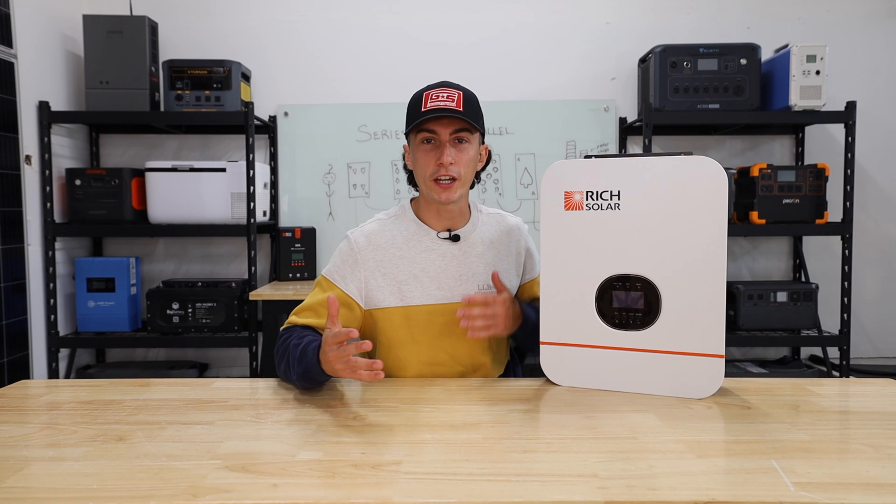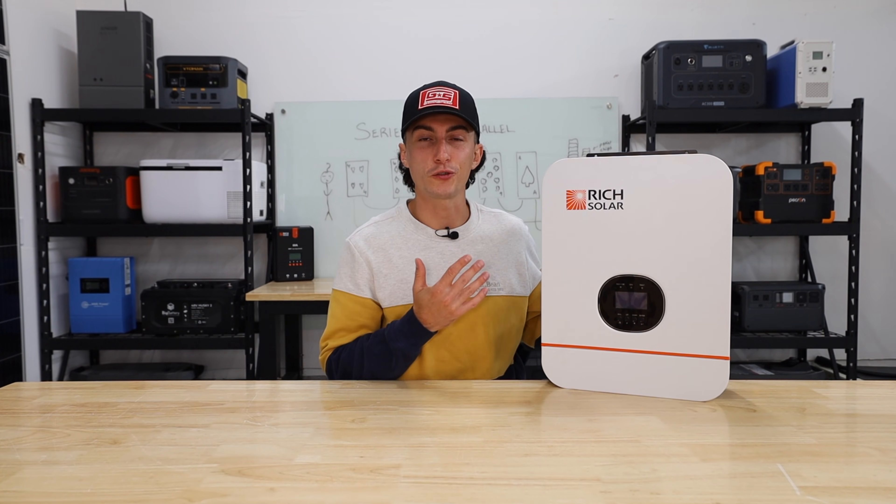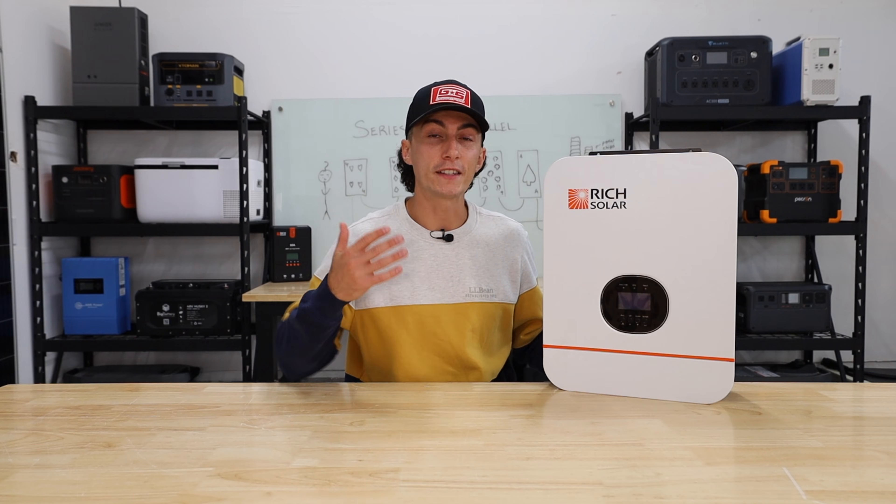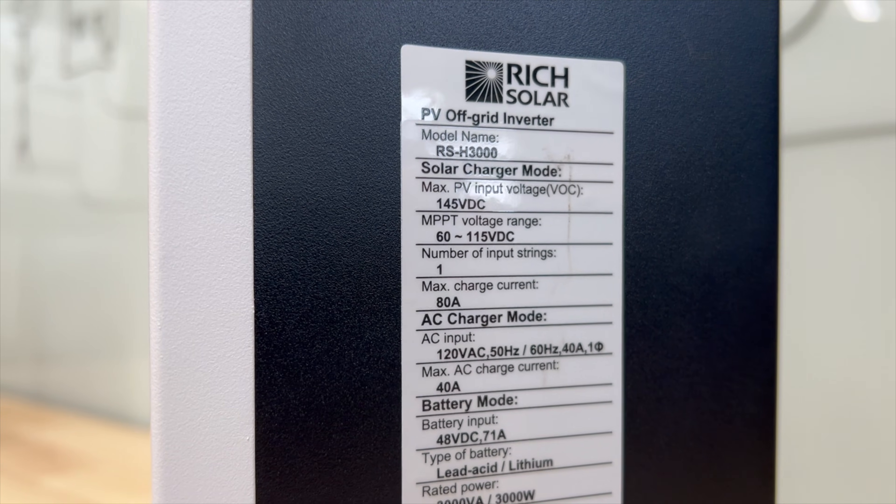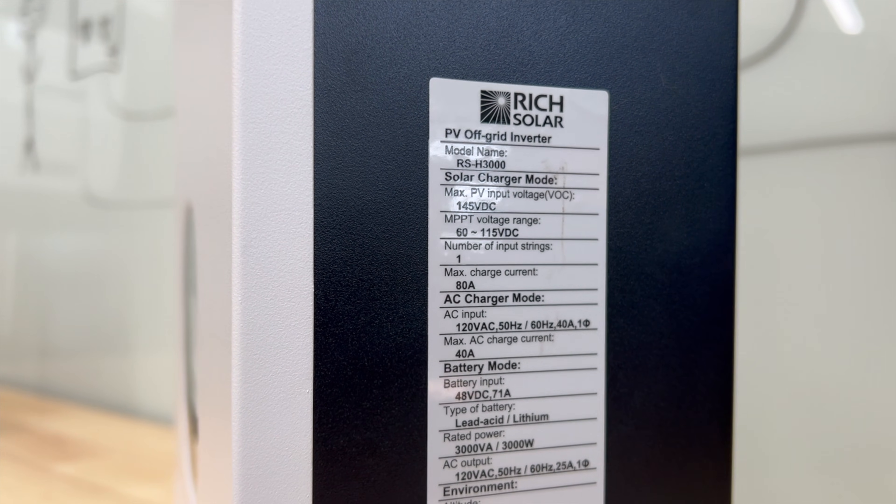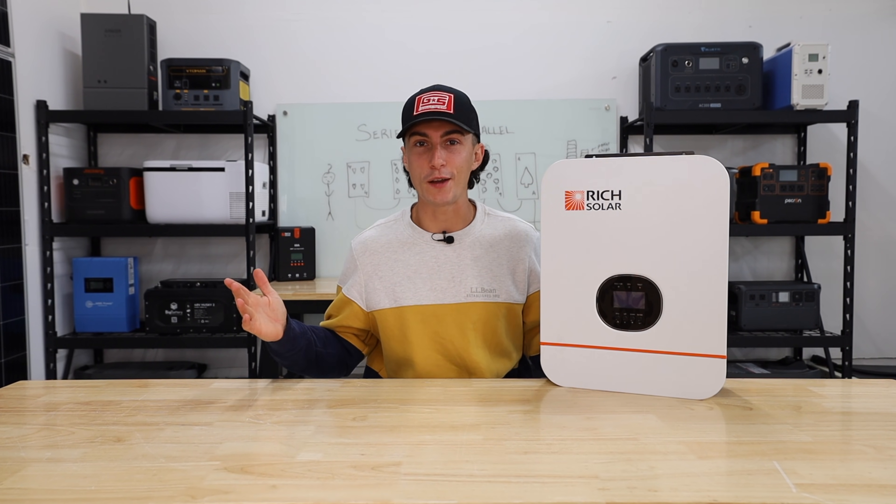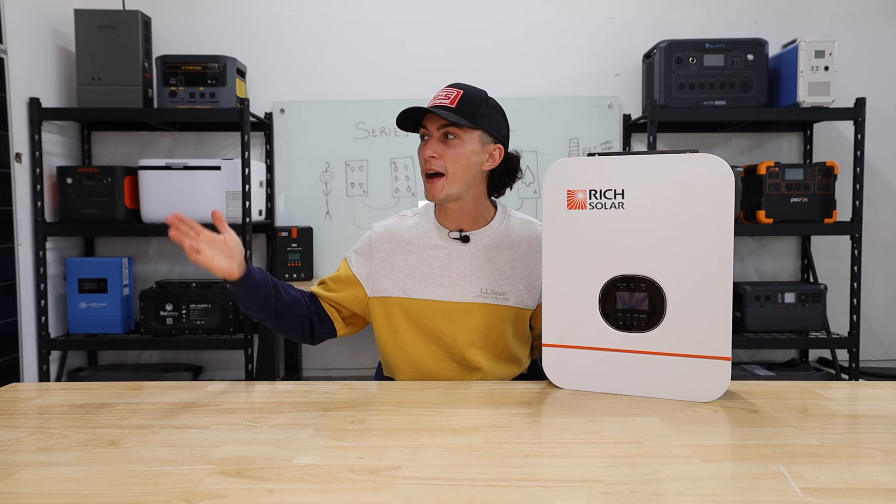If we were to take a look at a real life example, this little Rich Solar 3k inverter has a built-in charge controller with a limit of 80 amps and 60 to 115 volts. So we know we're never going to hit the amperage limit because both our examples, the max amperage we got to was 60 amps.